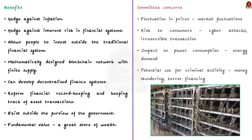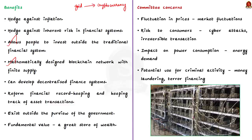Traditionally, gold has been one of the best ways for investors to protect themselves from inflation and monetary sector risks. Cryptocurrency is another such asset allowing people to invest outside the traditional financial system. A primary advantage of cryptocurrencies is the mathematically designed blockchain network with finite supply. The primary problem with the current monetary setup is that when the government prints more money, the value of your money gets wiped out due to high inflation — you don't have this problem with Bitcoin.